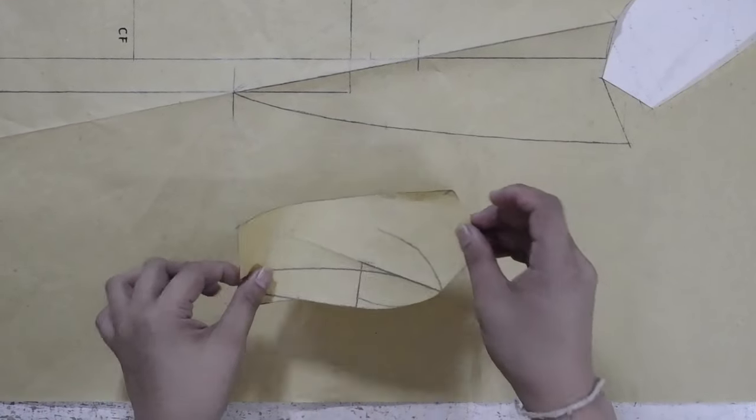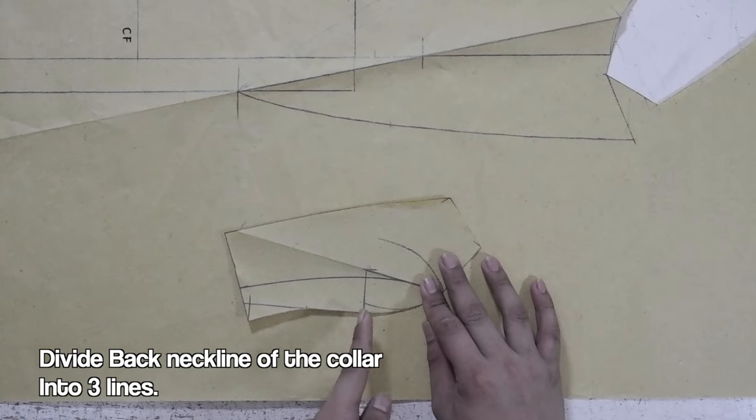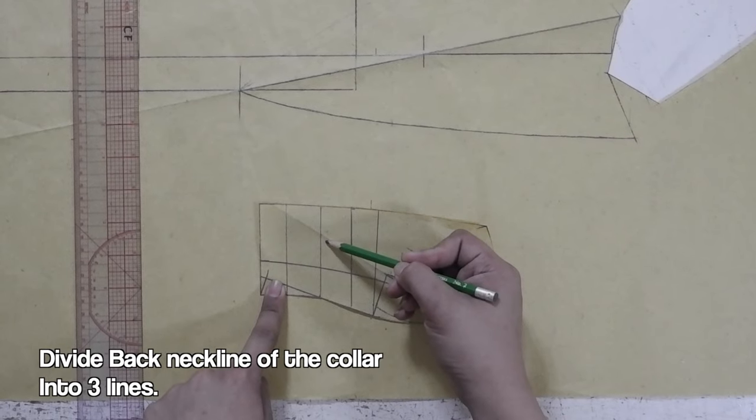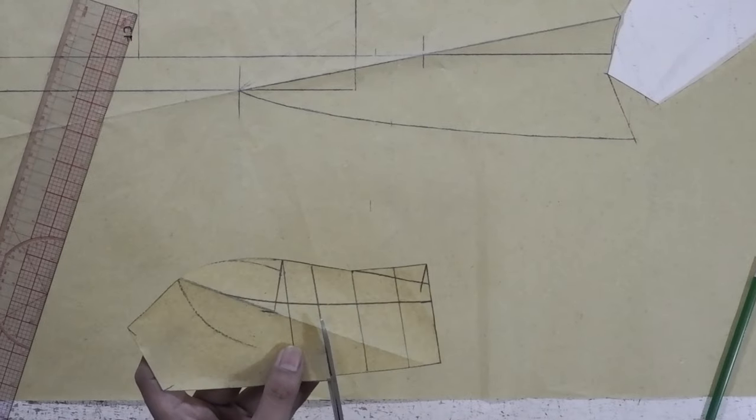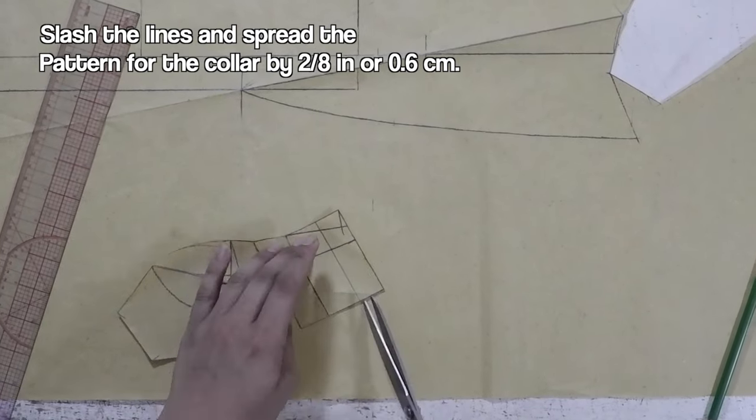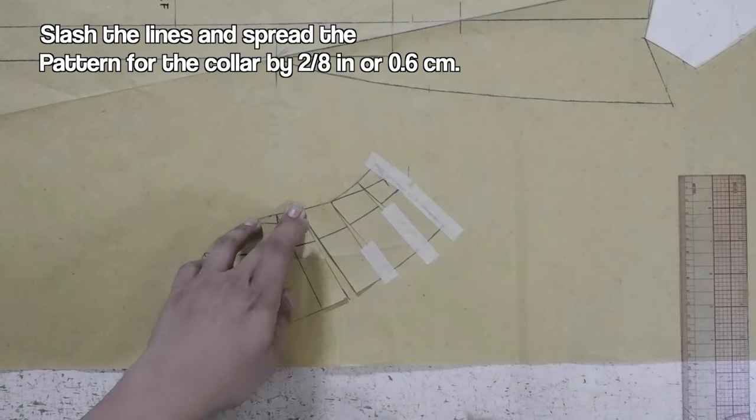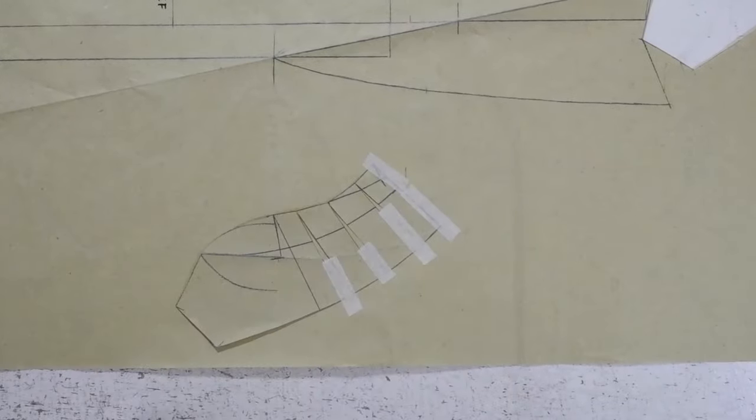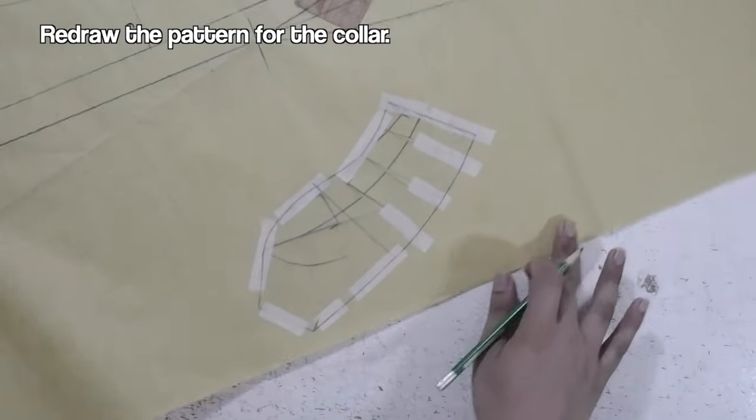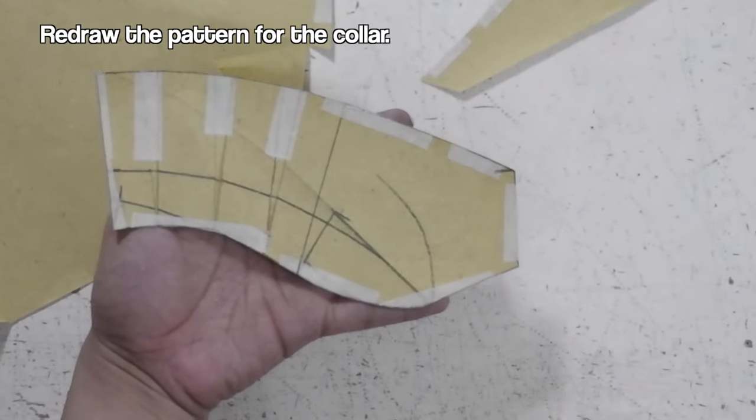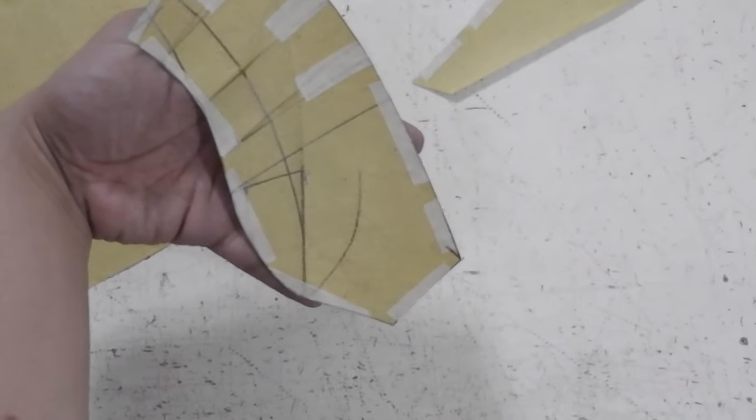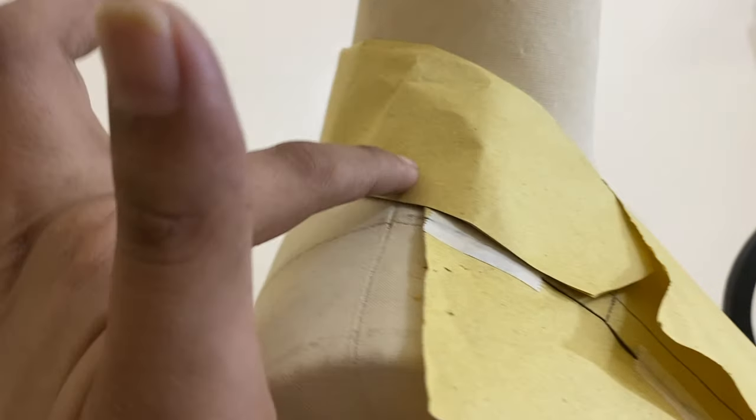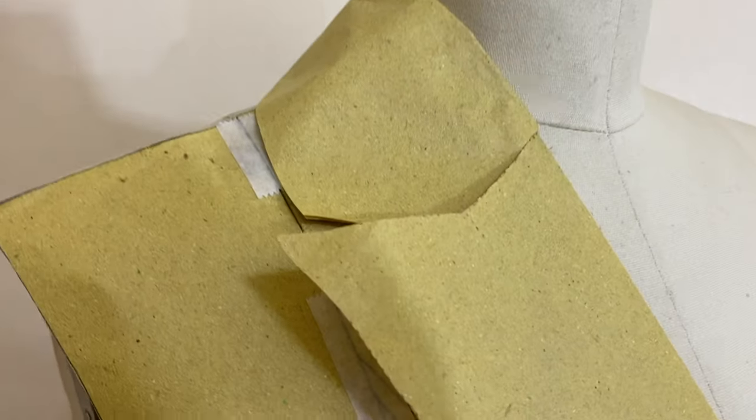By the way, if the fit of the collar is tight, we can divide the back neck of the collar into three lines. Slash and spread these lines by 2/8 of an inch or 0.6 centimeter. And redraw and re-blend the collar. Always check your collar on your dress form to see if the fitting is accurate or you're satisfied with it.